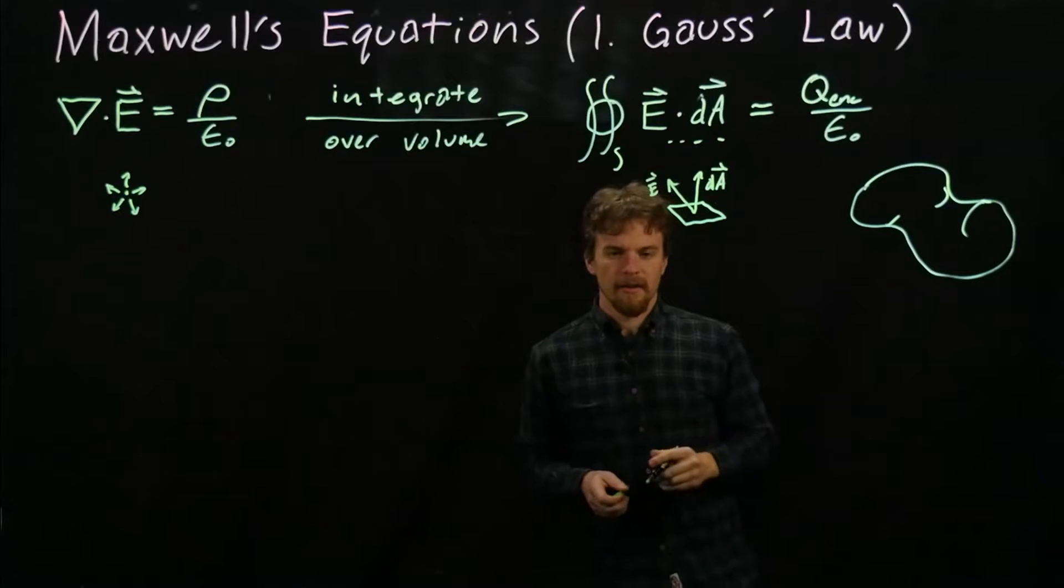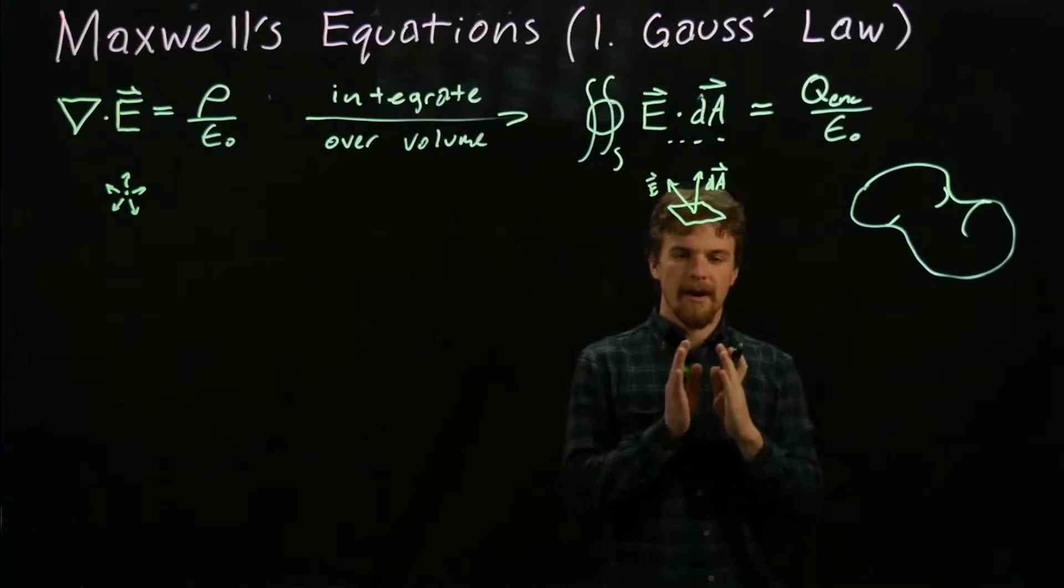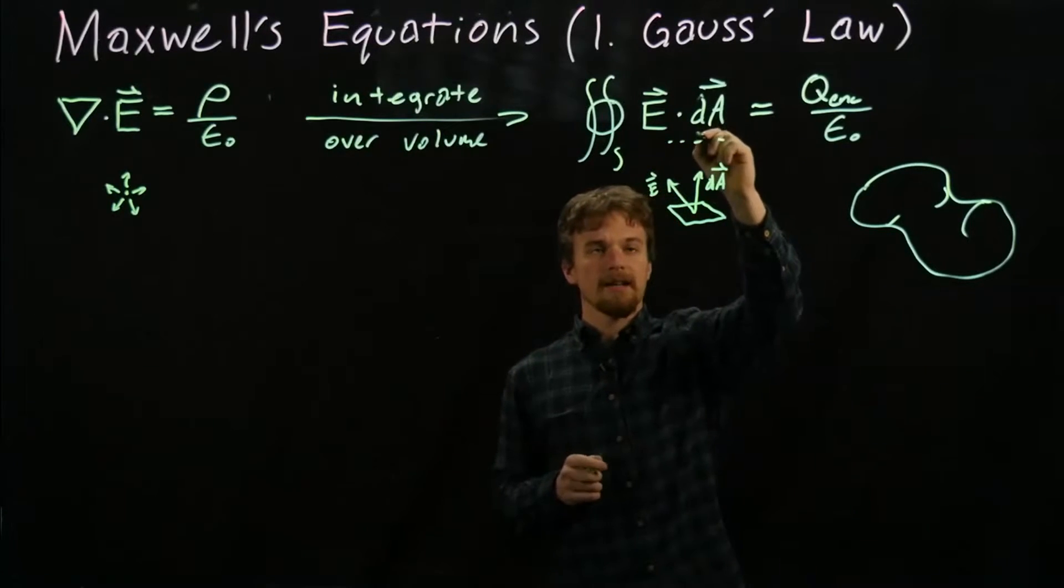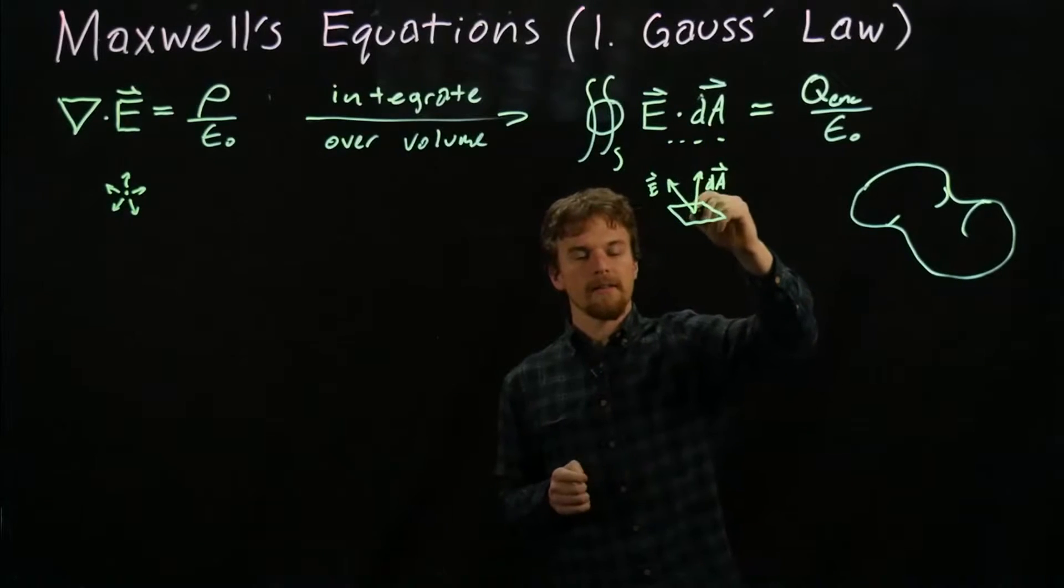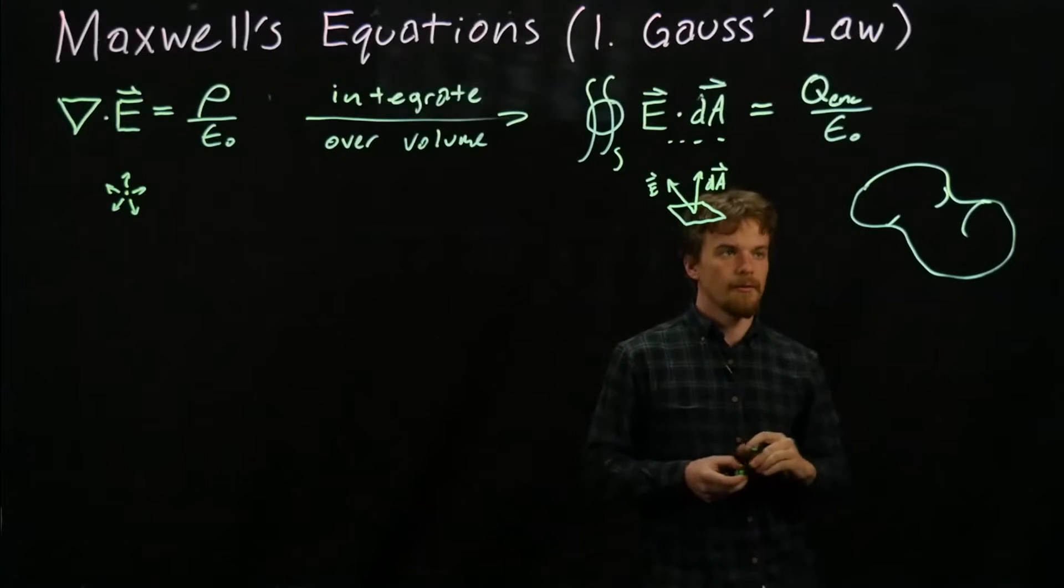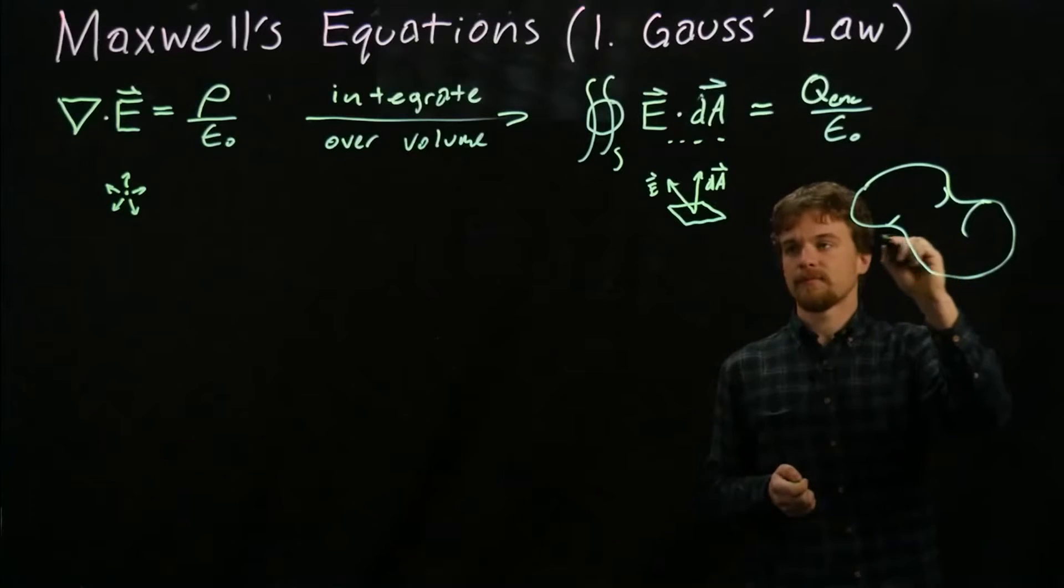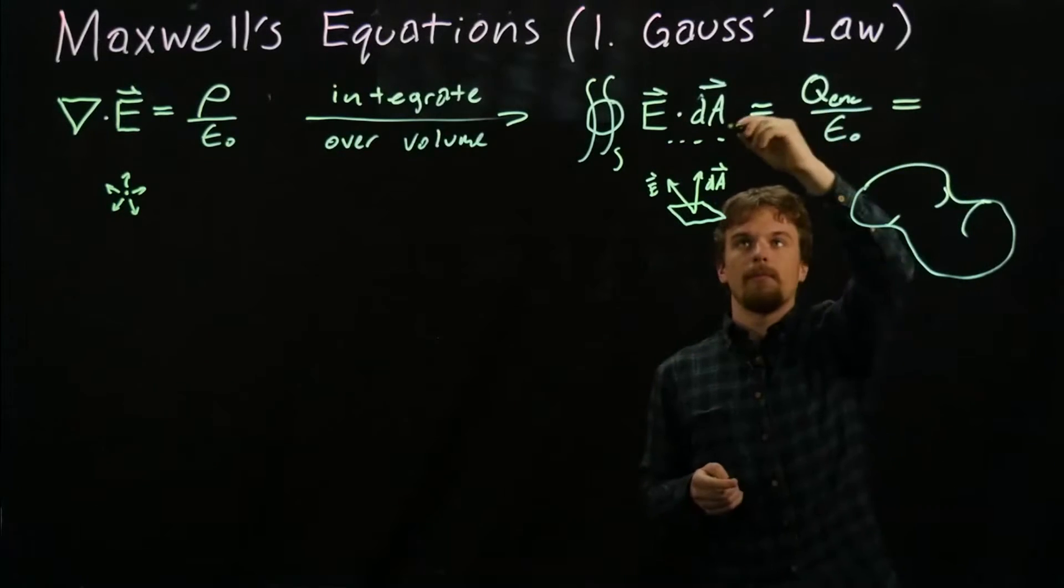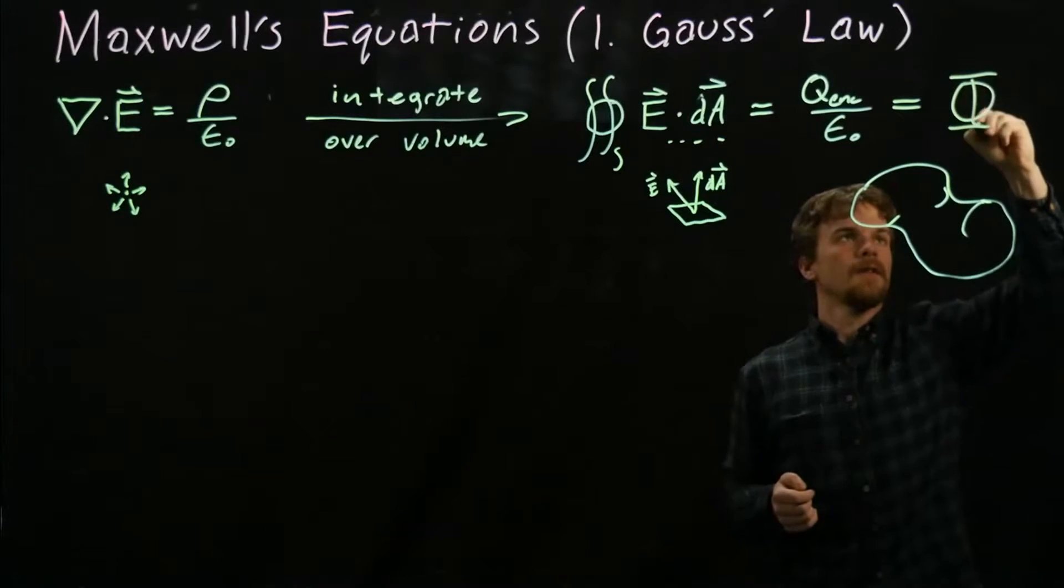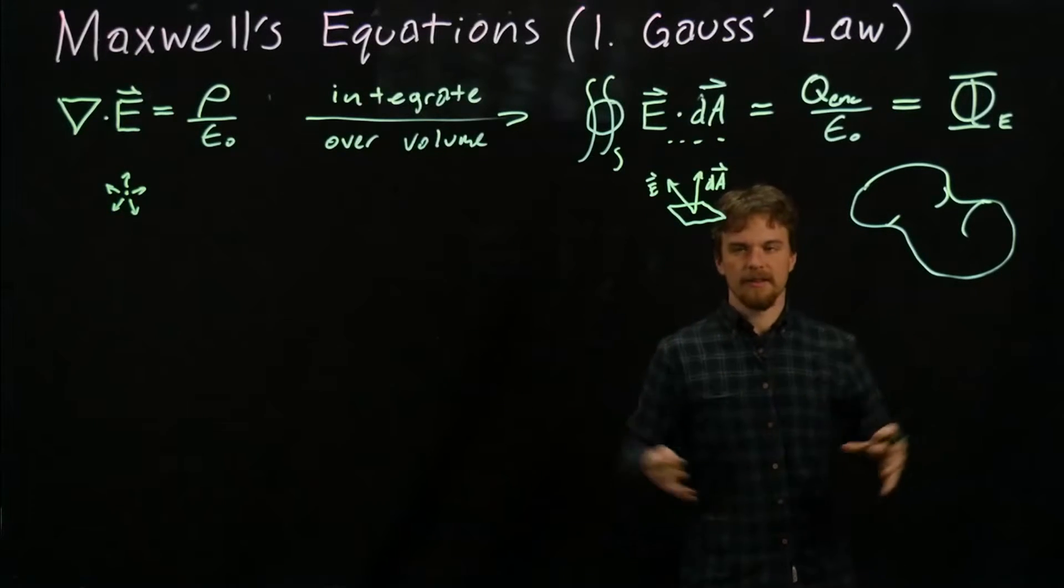When we take the dot product of E and dA, we know the dot product of two vectors tells us how parallel those vectors are. So this is asking how perpendicular to our surface is the electric field. When we integrate over the entire surface, we get what's called the electric flux.